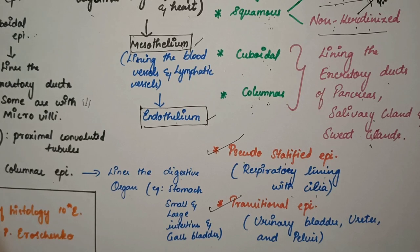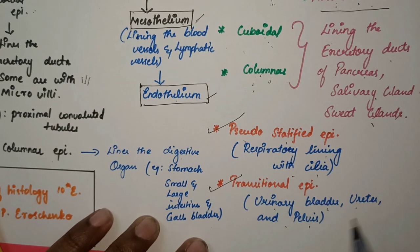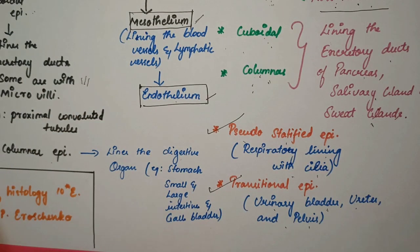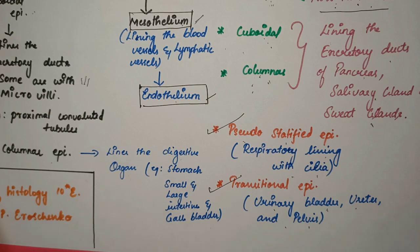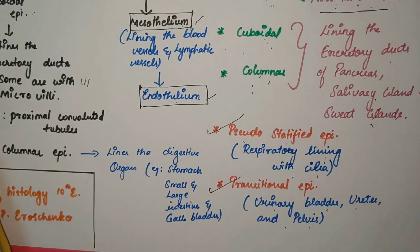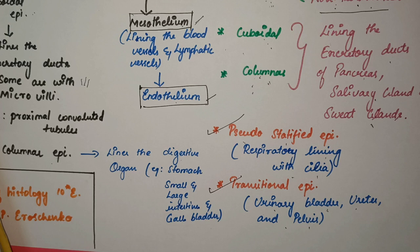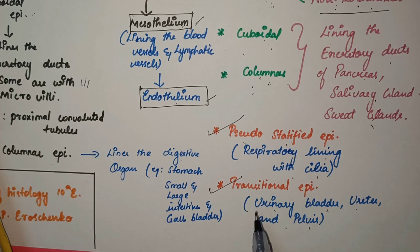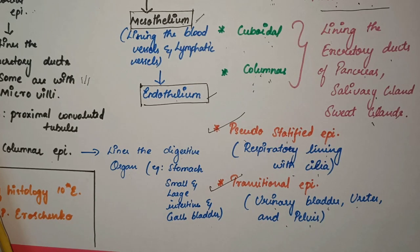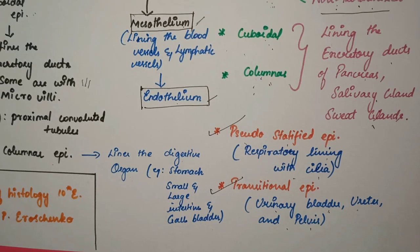Transitional epithelium is characterized by cells that show a dome-shaped appearance. It is seen in the urinary bladder, ureter, and renal pelvis. The urinary bladder is either stretching or relaxing. When contracted, the surface cells appear dome-shaped; when stretched, the epithelium appears squamous. This change in appearance is the classic feature of transitional epithelium.